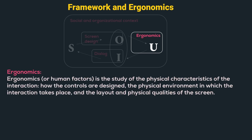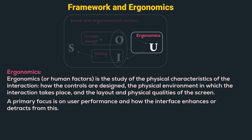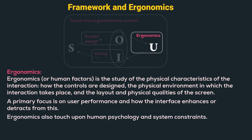Let us first understand the definition of ergonomics. Ergonomics, or human factors, is the study of the physical characteristics of the interaction — like how the controls are designed, the physical environment in which the interaction takes place, and the layout and physical qualities of the screen. A primary focus is on user performance and how the interface enhances or detracts from this. Ergonomics also touches upon human psychology and system constraints.